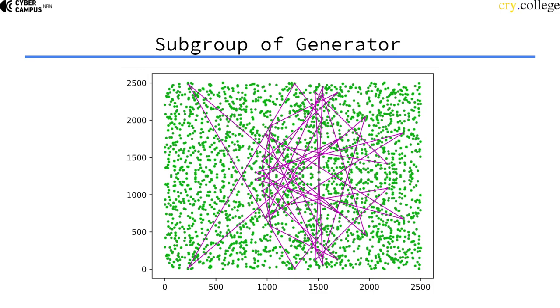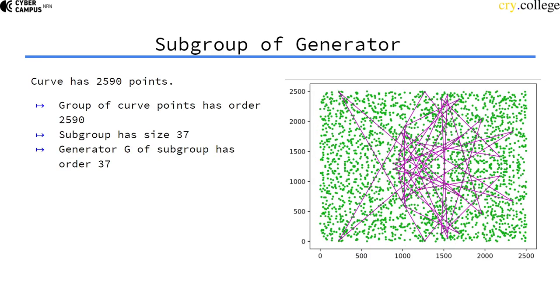So g generates this subgroup that is shown here. These are all points that you can reach just by adding g to itself repeatedly. This subgroup that g generates has a size of 37 because you can reach 37 points by adding g to itself. So the generator g has subgroup of order 37.